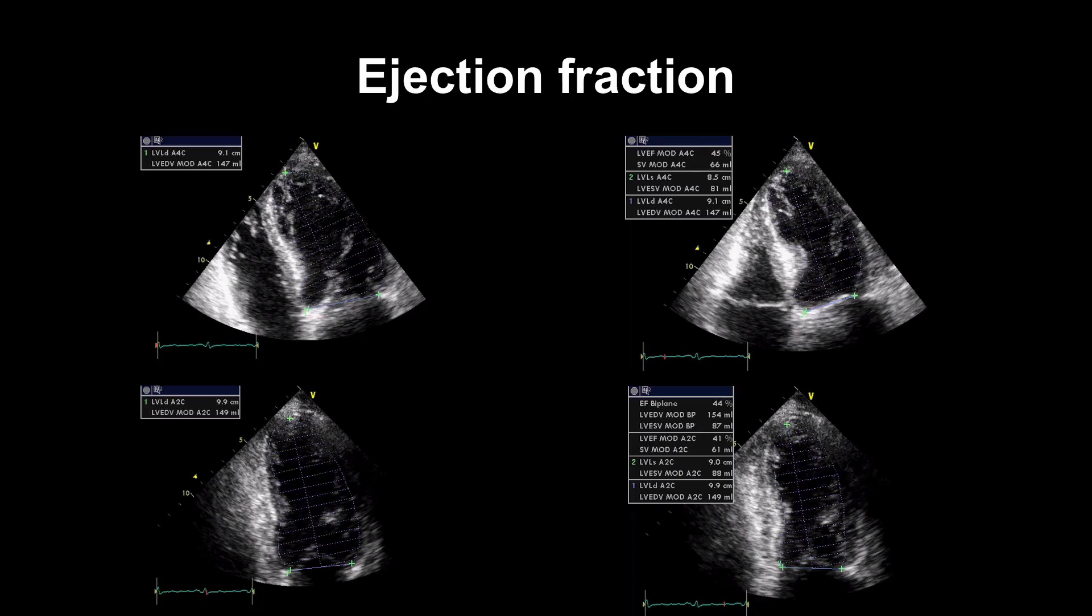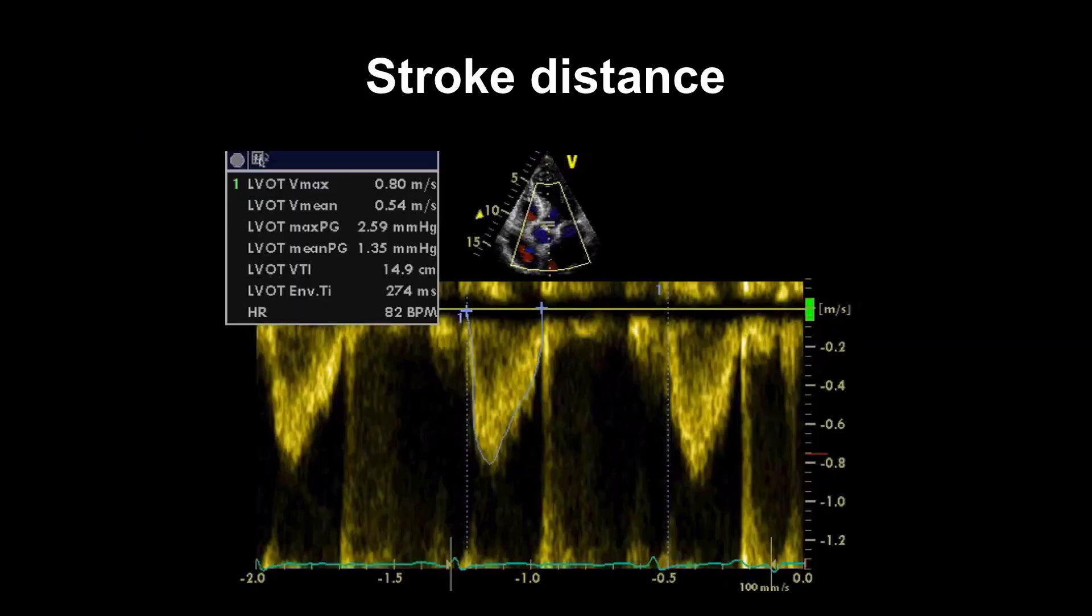Centers that don't use ejection fraction tend to use qualitative terms, but the same applies. They need to be sure that all of their echocardiographers are reporting similarly. Contrast agents can be used to improve endocardial definition if a really accurate ejection fraction is essential.